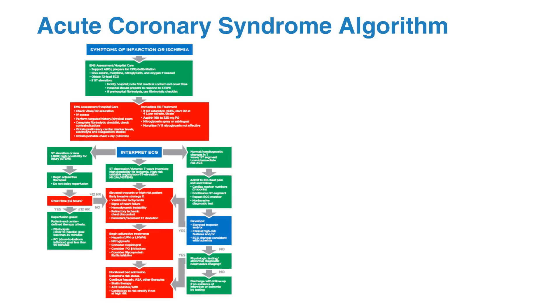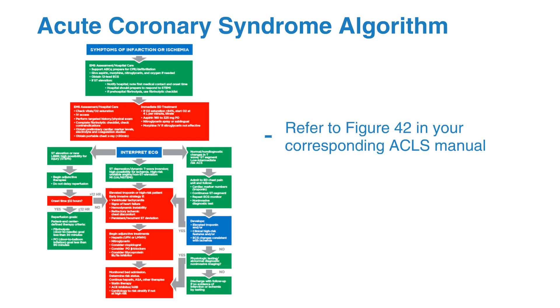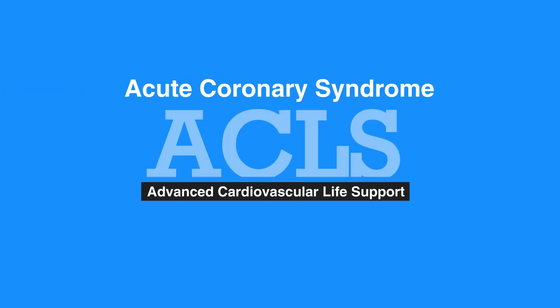For the acute coronary syndrome algorithm, refer to figure 42 in your corresponding ACLS manual. This concludes our lesson on acute coronary syndrome. Next, we'll review acute stroke.